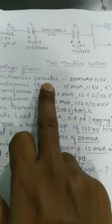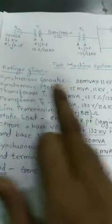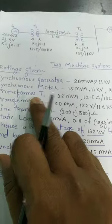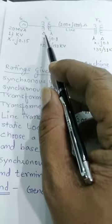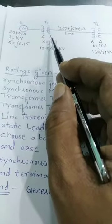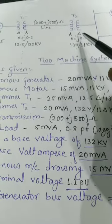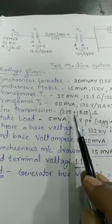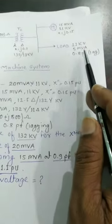The given ratings are: synchronous generator 20 MVA, 11 kV, reactance 0.15 per unit. Synchronous motor 15 MVA, 11 kV, X = 0.15 per unit. Transformer T1: 25 MVA, 12.5 kV / 132 kV, delta-star connection. Transformer T2: 25 MVA, 132 kV / 11 kV, star-delta. Transmission line impedance X = 200 + j500 ohms. Static load: 11 kV, 5 MVA, 0.8 power factor lagging.